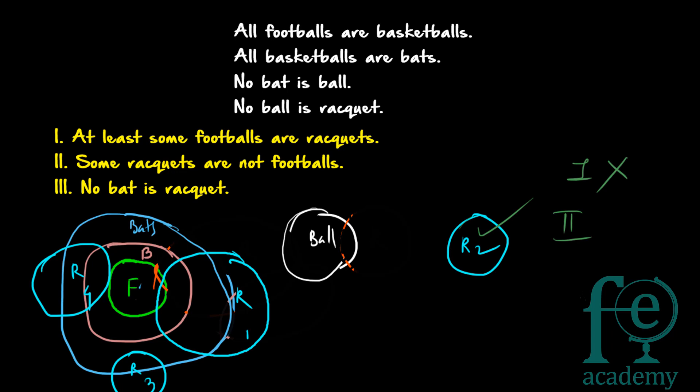Now what about conclusion 2: some rackets are not footballs. Only no ball is racket is given. There is a possibility that racket can come totally inside footballs — that is also one possibility. Racket can overlap with basketballs, or with bats, basketballs, and footballs, or only with bats, or fully inside the football. If racket comes fully inside footballs, all rackets are footballs, so some rackets are not footballs does not follow in that case. So second conclusion also does not follow.